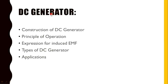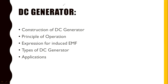The following topics will be covered for the DC generator: first, the construction of the DC machine; second, the principle of operation of the DC generator; third, how to get the EMF induced in the DC machine and its expression; fourth, the different types of DC generator; and finally, the applications of the DC generator. Let's start with the construction.